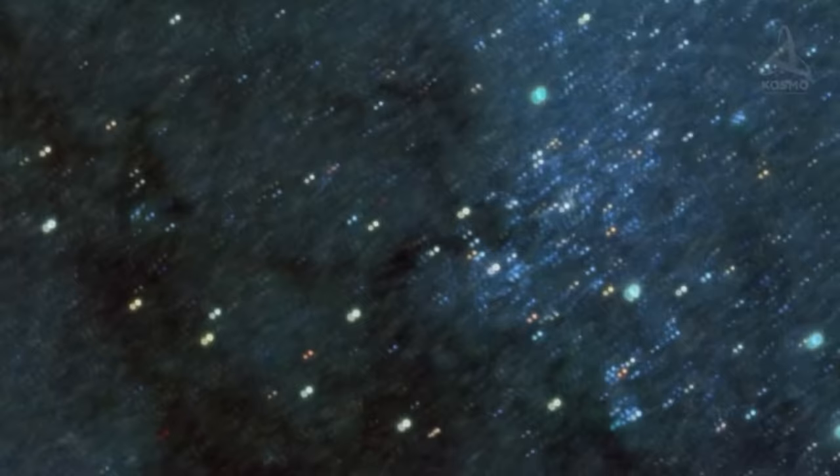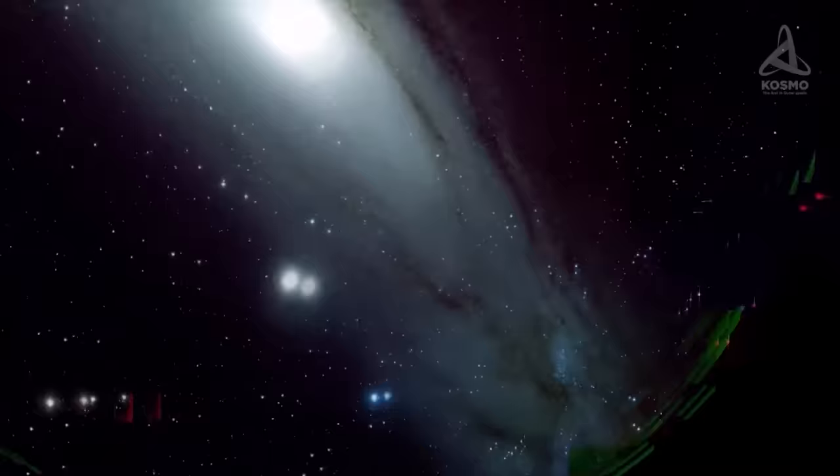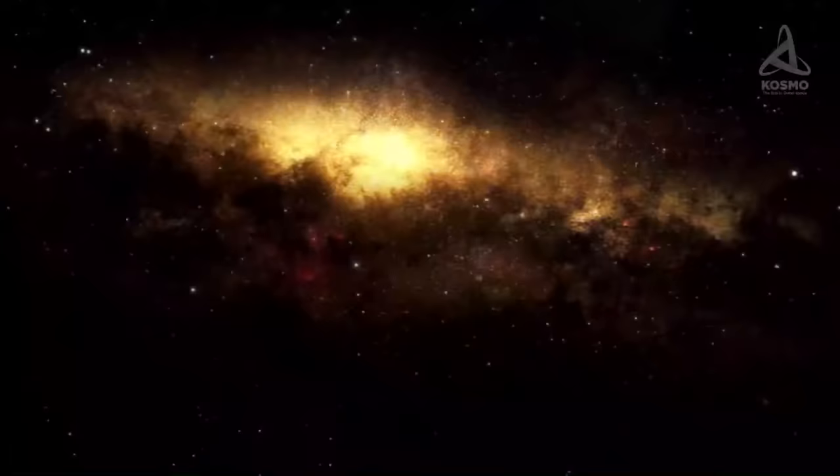Many would argue that it is the Andromeda galaxy that is the closest, which is located 2.52 million light years away. However, this is the closest object among the largest spiral galaxies. As for the closest galaxy, a hypothetical Canis Major Dwarf galaxy should be named.